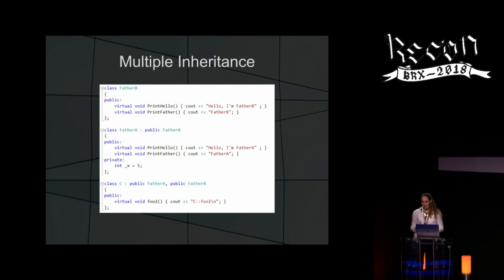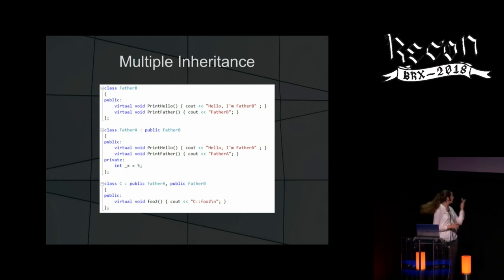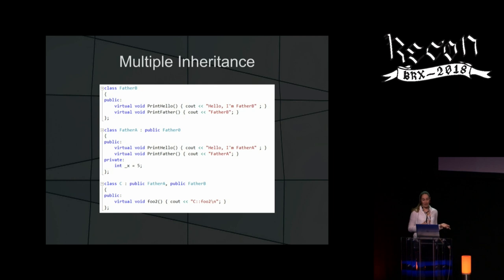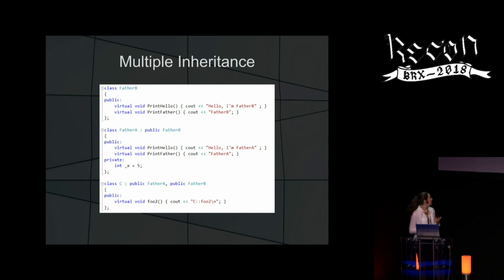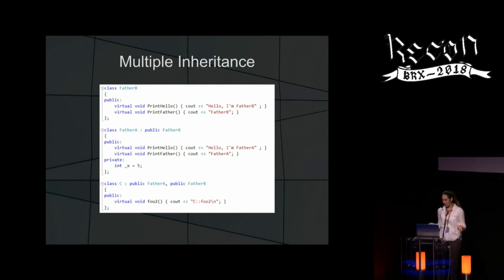Now we'll look at multiple inheritance in C++. Class C in this example inherits from two parents, father A and father B. Both father A and father B implement virtual functions, and class C also implements its own virtual function. So how does the object really look, because it's a little different from the object we saw before.